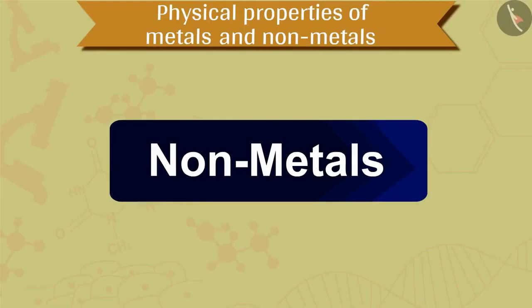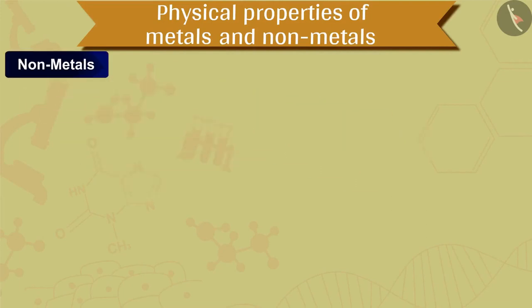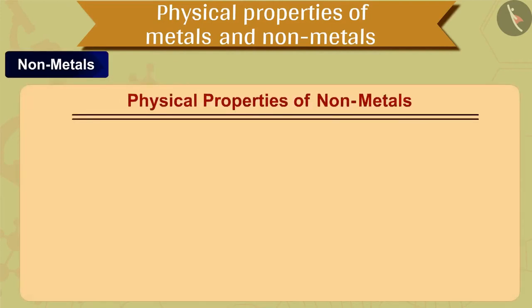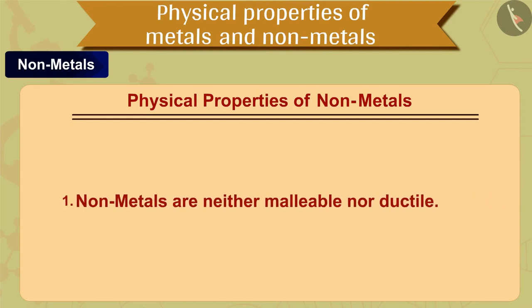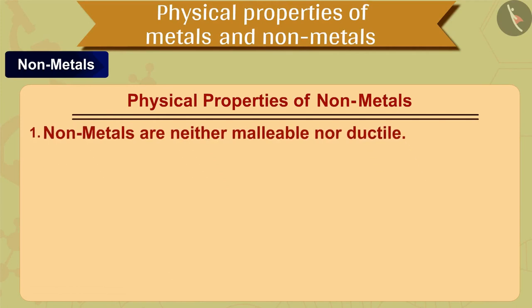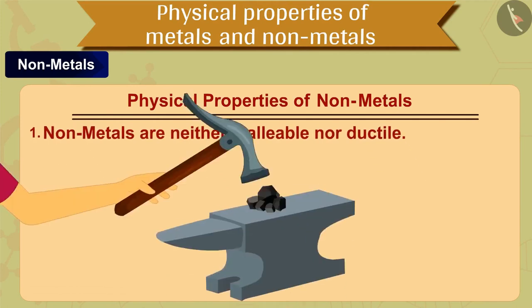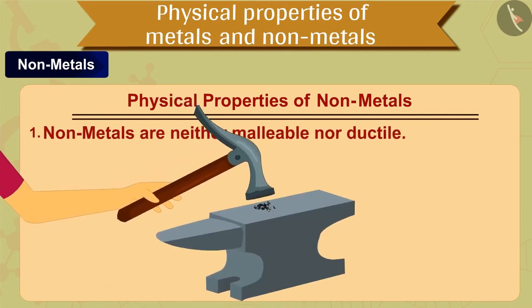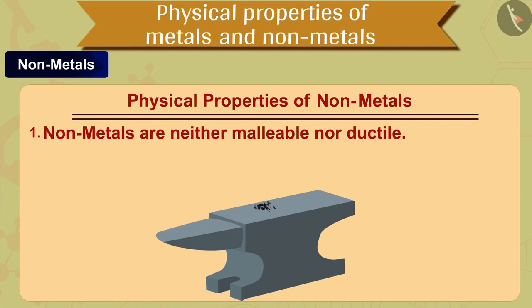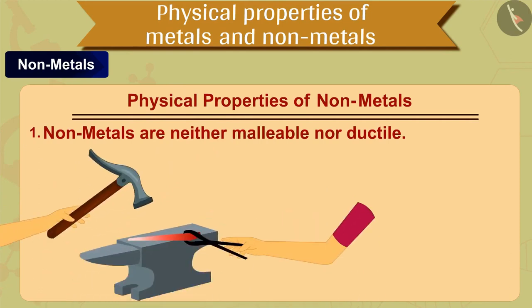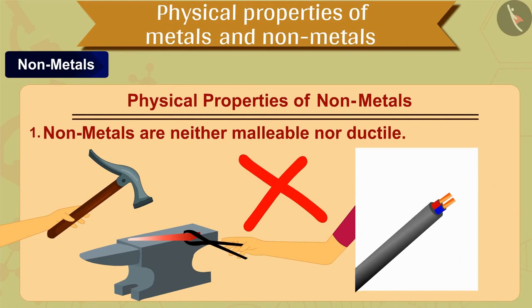Let us now move ahead towards the physical properties of non-metals. The first property of non-metals is that they are neither malleable nor ductile. They are brittle. That is, they break easily. Therefore, solid non-metals can neither be hammered into thin sheets nor can they be drawn into wires.